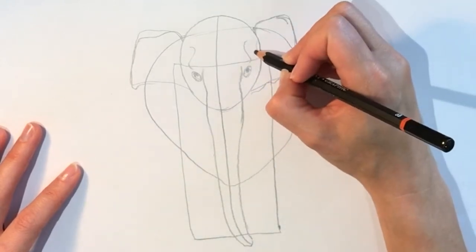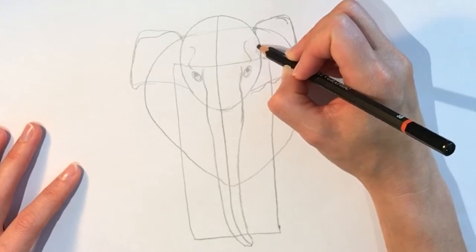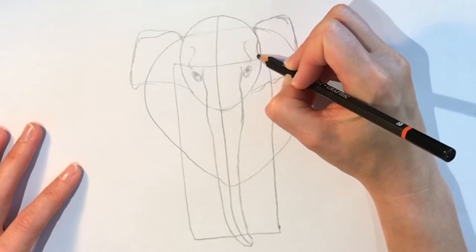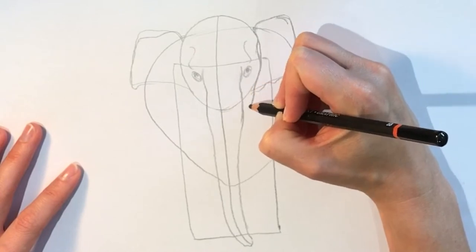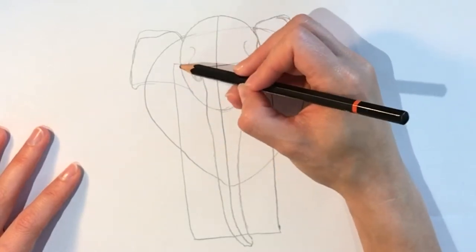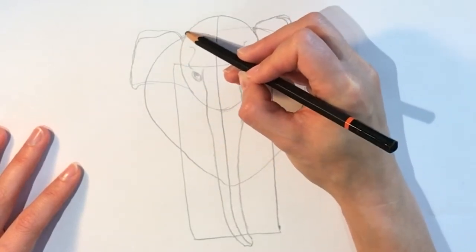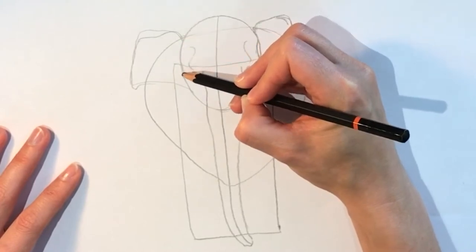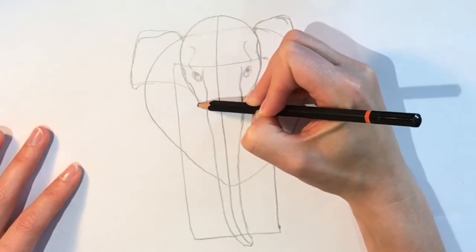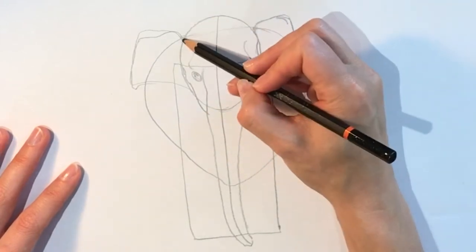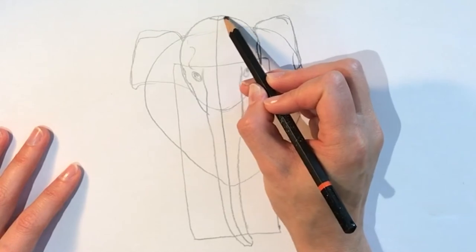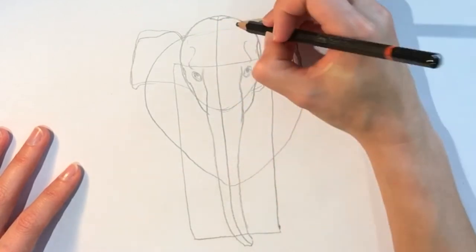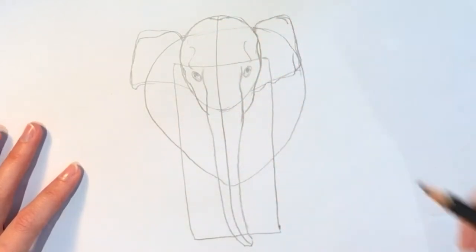I'm going to do the side of the face coming down like this. And then the head. So the skull has a little bump in it like that. There we go, it's starting to take shape.